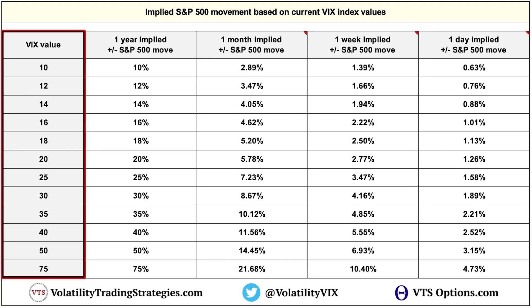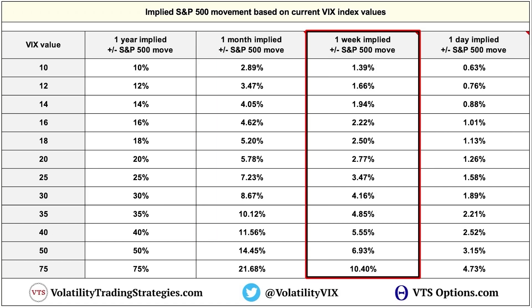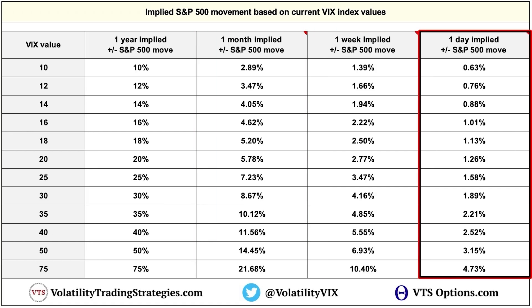As a quick cheat sheet, you can see the VIX values on screen showing what the VIX is implying for a one-month move — divide by the square root of 12; one-week move — divide by the square root of 52; and one-day move — divide by the square root of 252, representing trading days only.